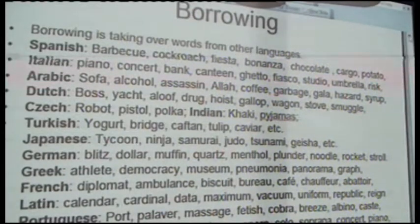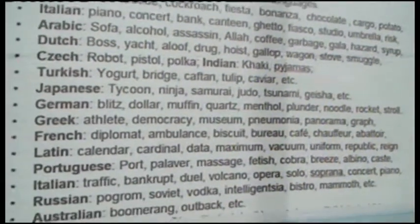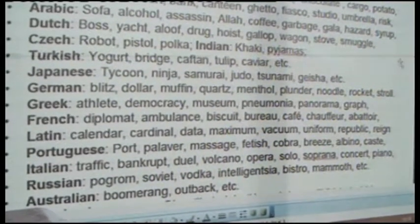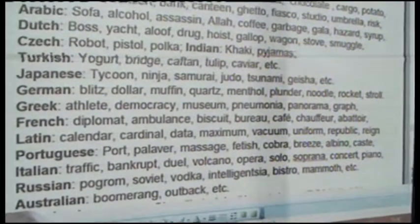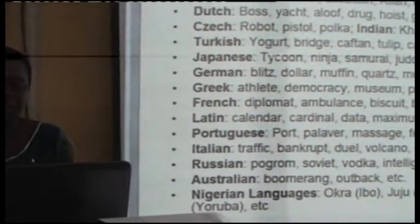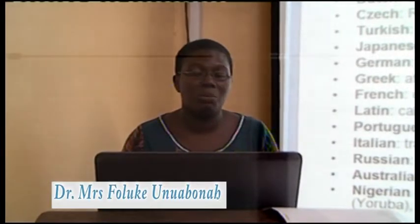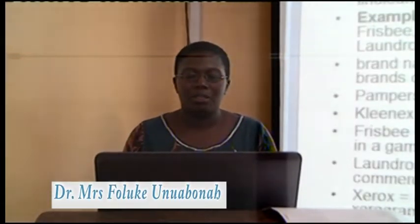Even from Nigerian languages, English has borrowed items such as 'juju,' 'abiku,' 'okra,' 'tango,' 'dashiki.' These are words that you would even find in some dictionaries.